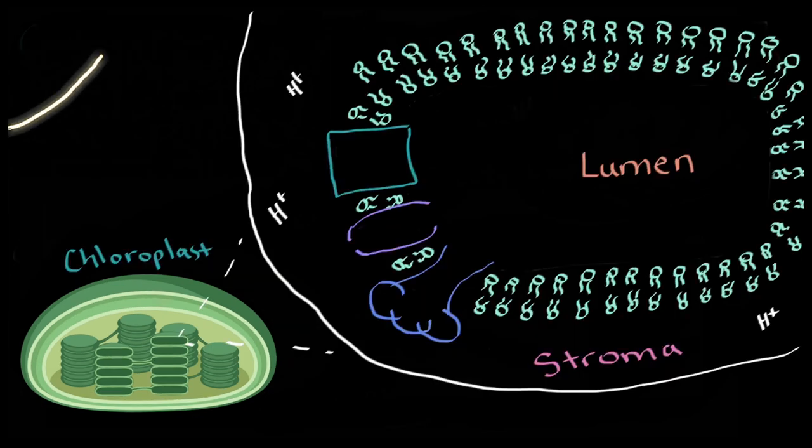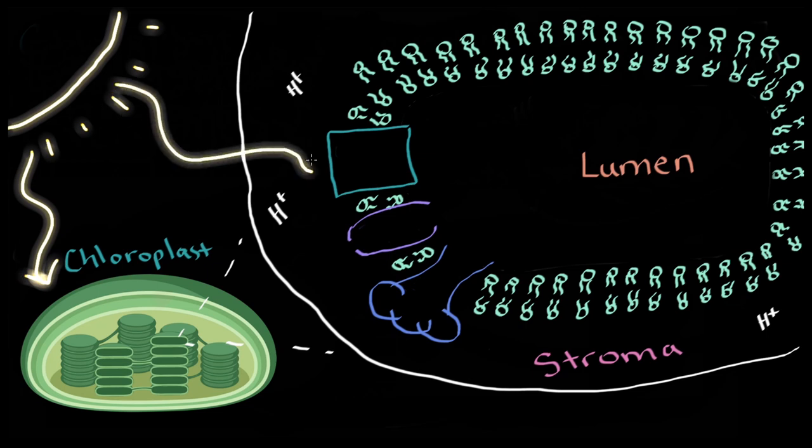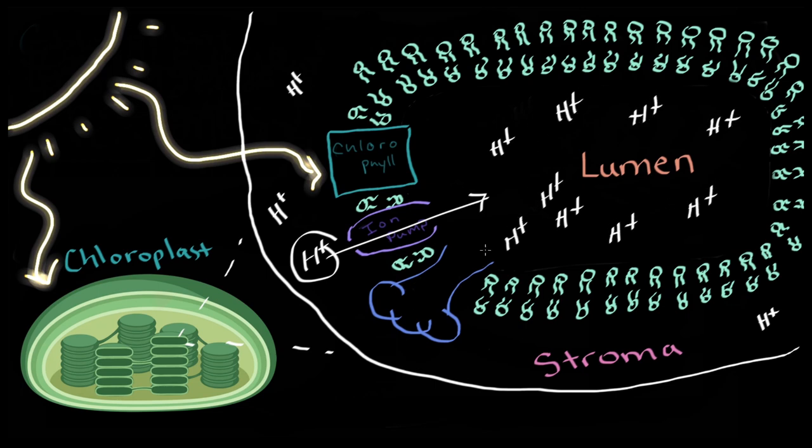When a photon of light ends its eight-minute journey from the surface of the sun to the surface of a leaf, its energy is absorbed by the chlorophyll embedded in the thylakoid membrane. This energy powers a pump, which literally charges the inside of the thylakoid like a battery by moving the ions inside. As the charge builds up, the energy can be used to do work.